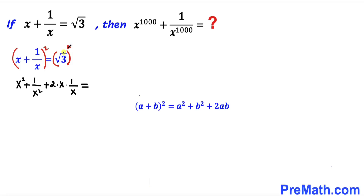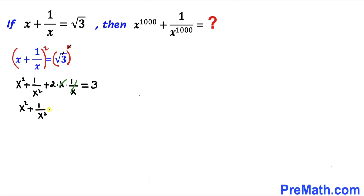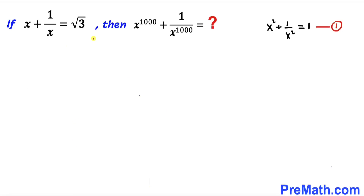The square and square root undo each other, giving us 3 on the right. The x and 1/x cancel, so we get x² + 1/x² + 2 = 3. Subtracting 2 from both sides, x² + 1/x² equals 1. Let's call this equation number 1.